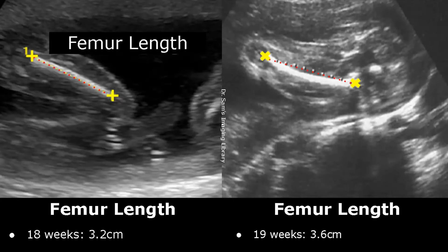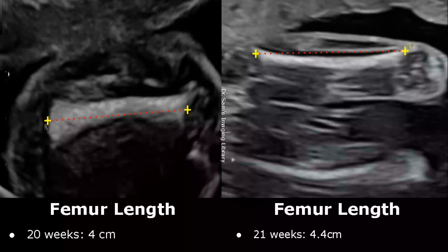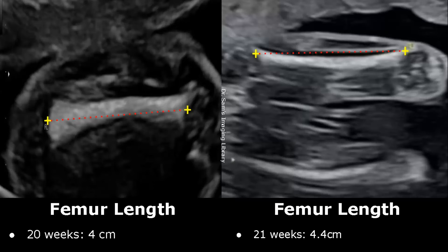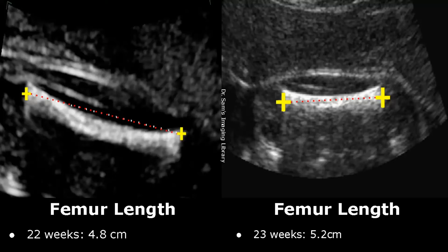At 20 weeks, the femoral length can reach 4.4 cm. By 21 weeks, it can reach 4.4 cm. At 22 weeks, the femoral length can be around 4.8 cm, and it can reach up to 5.2 cm at 23 weeks.